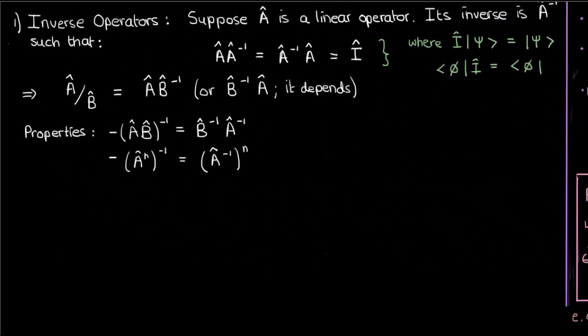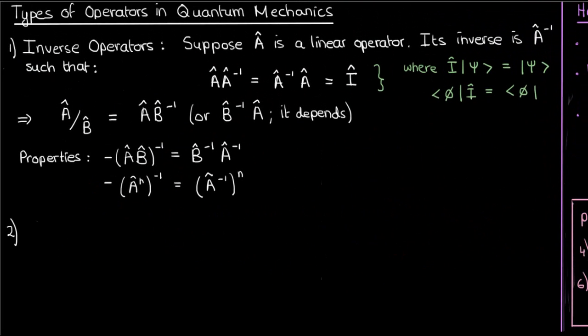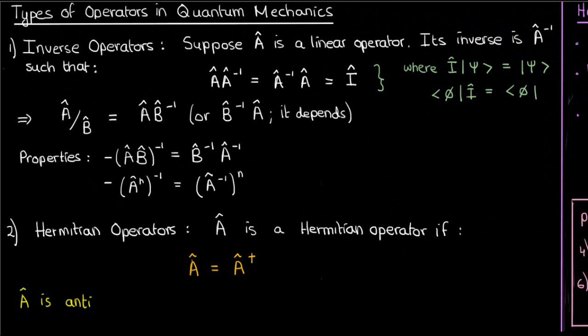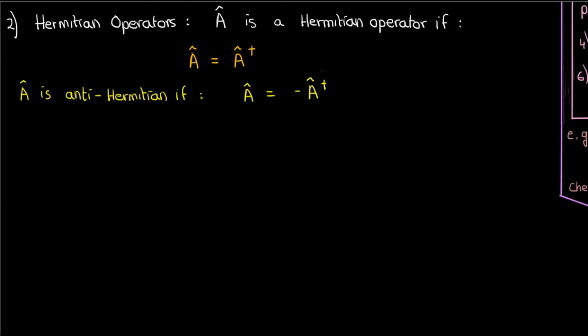So now that we've discussed the Hermitian conjugate, let's now talk about Hermitian operators. A Hermitian operator is simply an operator that's equal to its Hermitian conjugate. An anti-Hermitian operator, on the other hand, equals the negative of its Hermitian conjugate. But for quantum mechanics, the Hermitian operator is probably going to be the most relevant one.